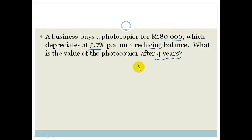So let's have a look. We've got A equals P times 1 minus I all to the power of N. We know that P is the amount of money we paid for the photocopier which is 180,000.